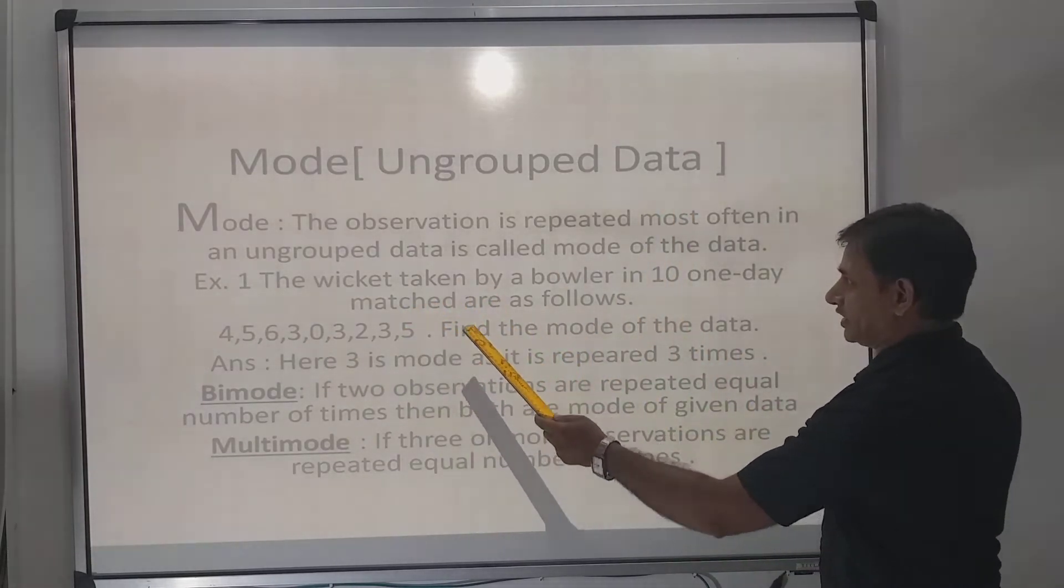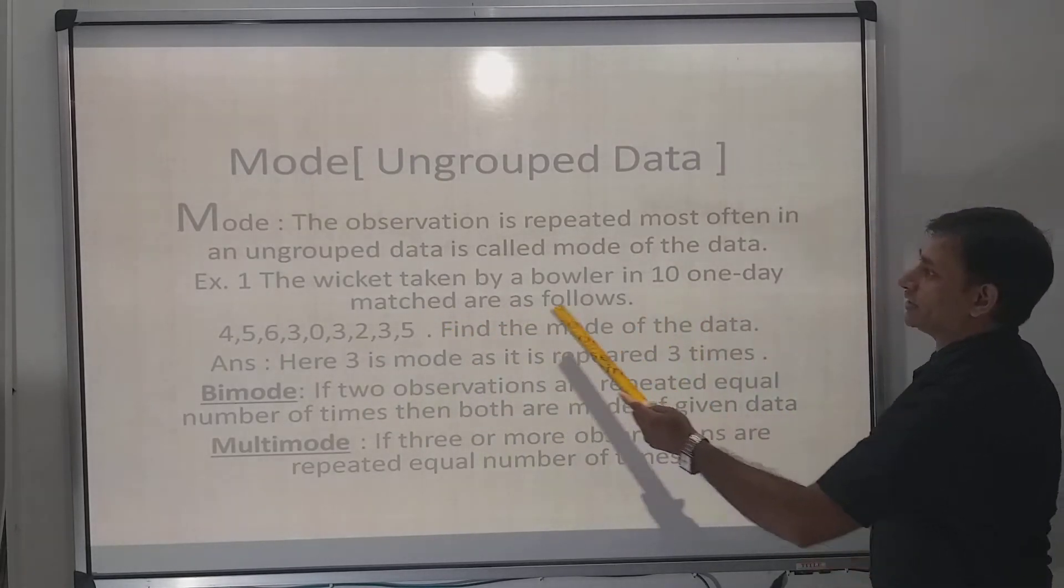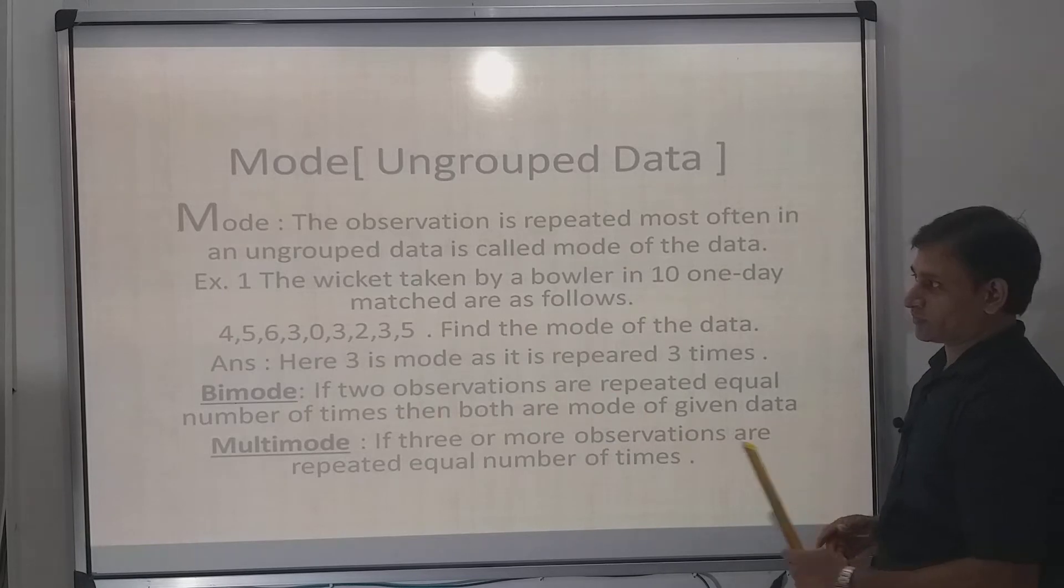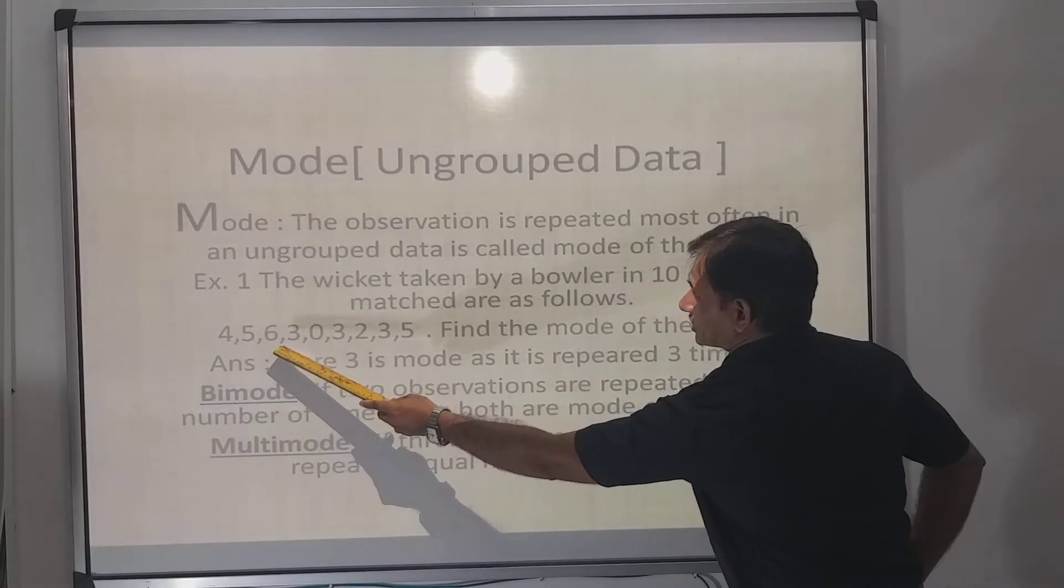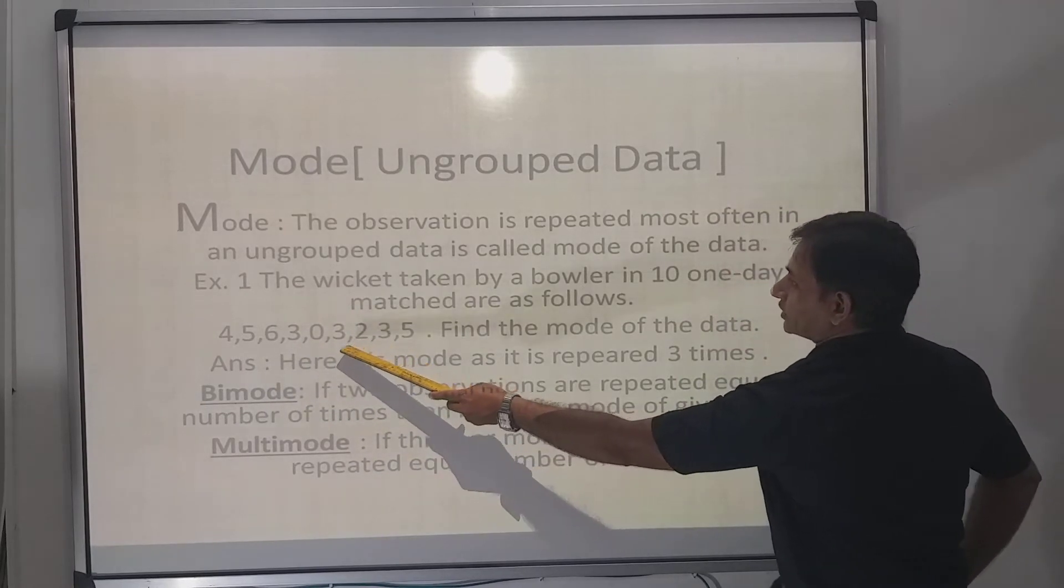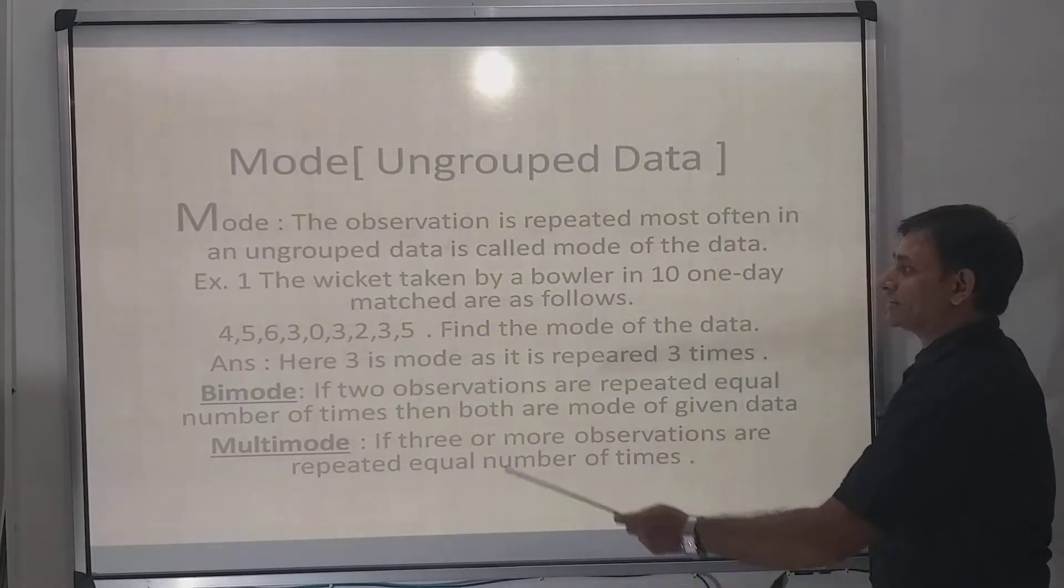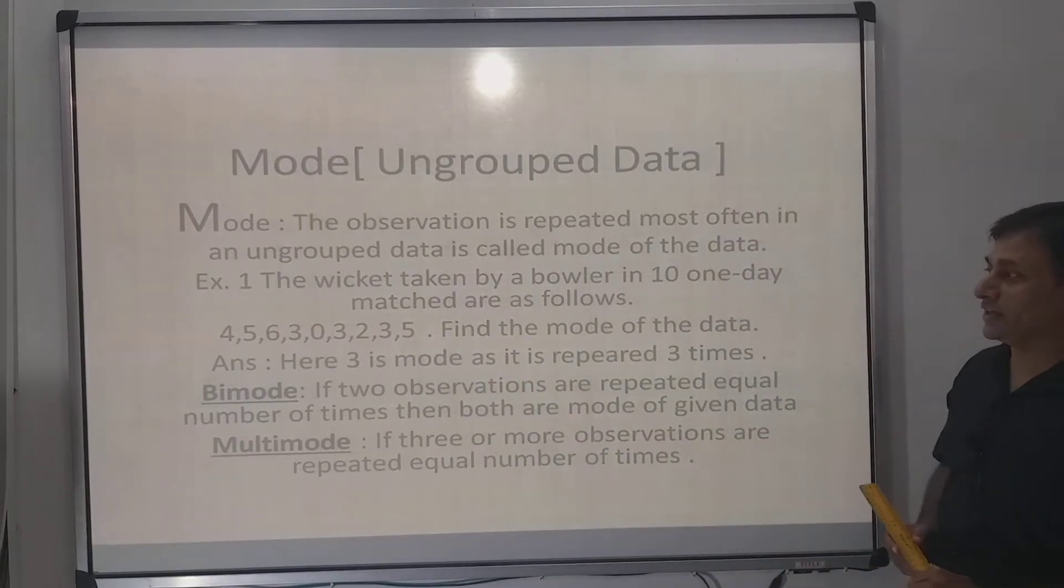Example: The wickets taken by a bowler in 10 one-day matches are as follows: 3, 5, 6, 3, 0, 3, 2, 3, 5. Find the mode of the data. You have to find mode.